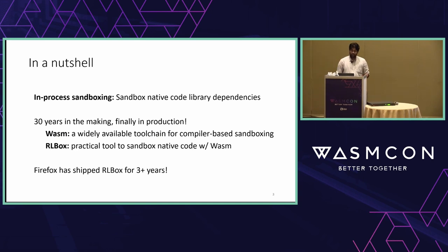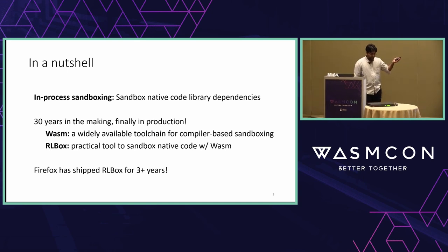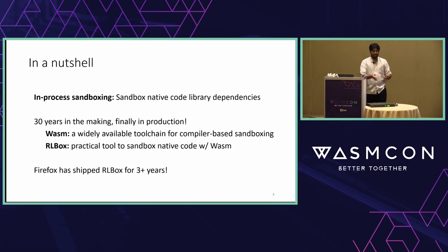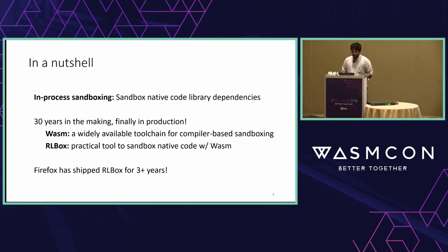This is an old idea, introduced in academia 30 years ago, but this is the first time it's making its way to production and sustained use for millions of users. What made this possible is WebAssembly — a widely deployed, production-ready toolchain — and a tool we wrote called RLBox, which makes it practical to put libraries into a WebAssembly sandbox. This is something Firefox has been shipping for three-plus years, and all of it is completely general — if you have a C++ application, you can use RLBox too.